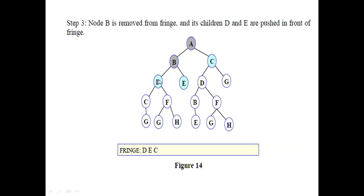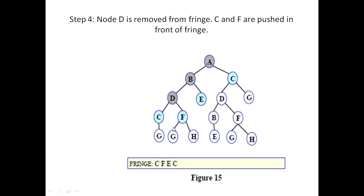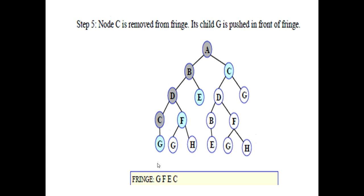D and F are picked, D is removed, and its children C and F are added at the front of the fringe. The new fringe is C, F, E, C. Again, C is picked, its child G is added, C is removed, and the new fringe becomes G, F, E, C.